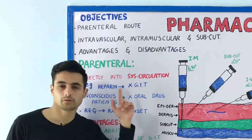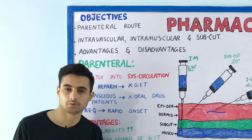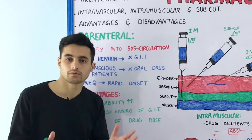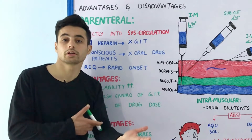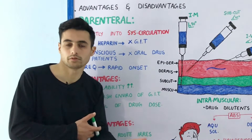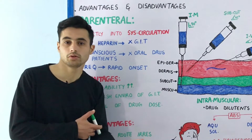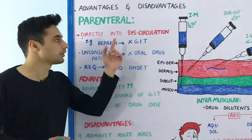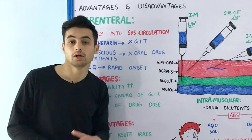The parenteral route, in very simple words, consists of the pathway or route through which the drug is administered directly into your bloodstream or directly into your systemic circulation.